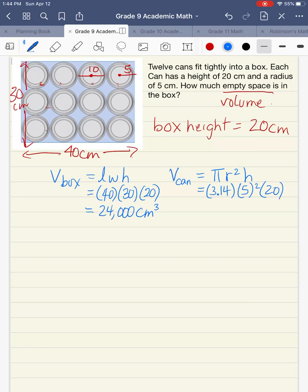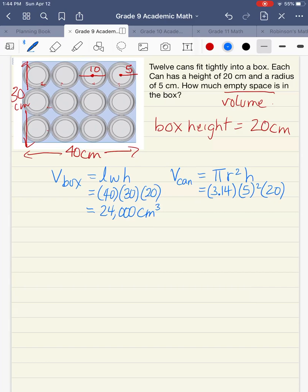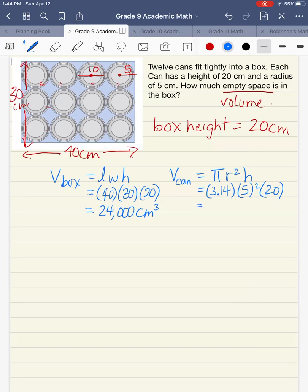For the volume of our can, we have 3.14 times 5 squared times 20. We need to remember to do BEDMAS. Some of you will have a calculator that does BEDMAS for you, but here we're going to do our exponents first. 5 to the power of 2 gives us 25. So now we have 3.14 times 25 times 20 and that's going to give us 1570 centimeters cubed.